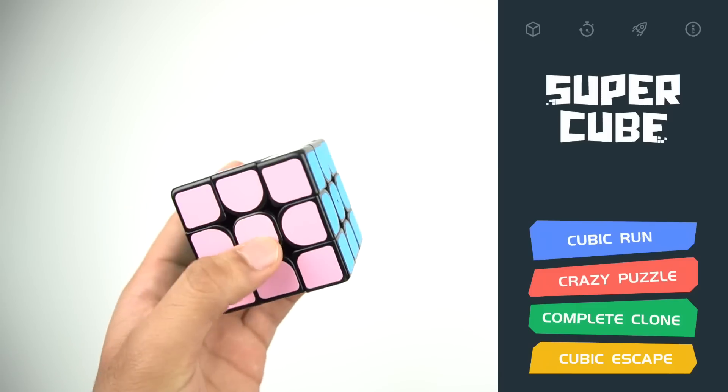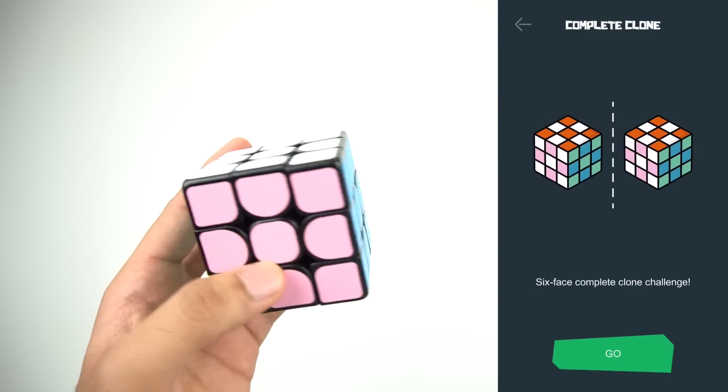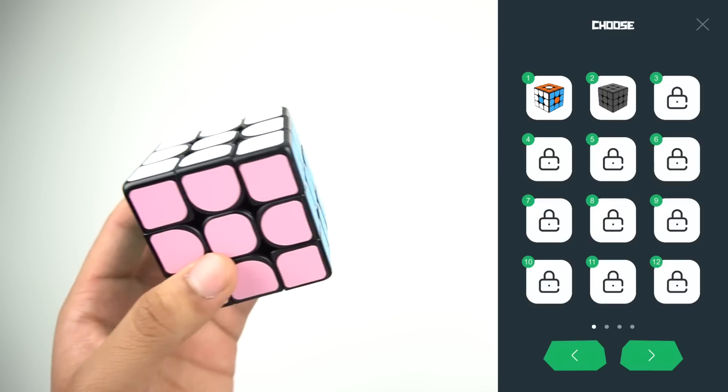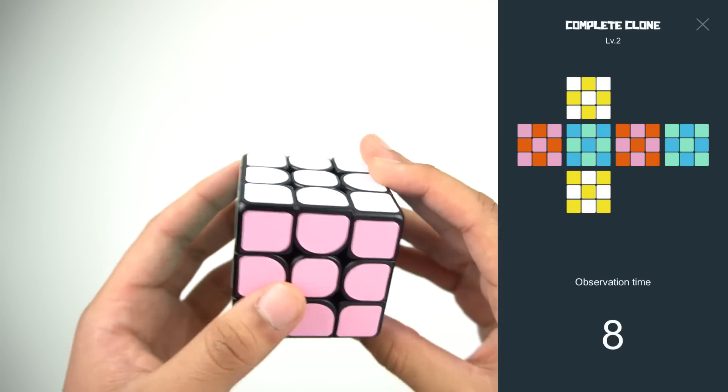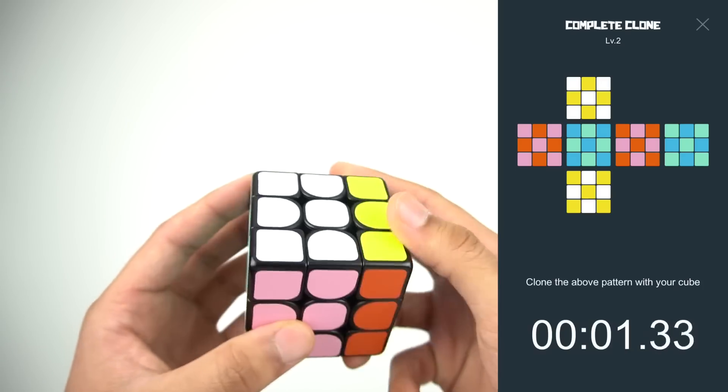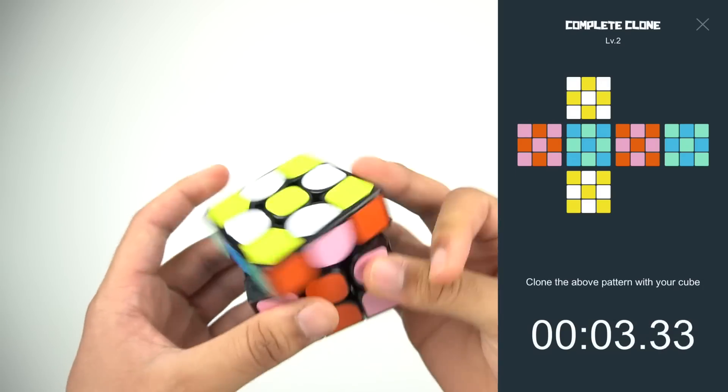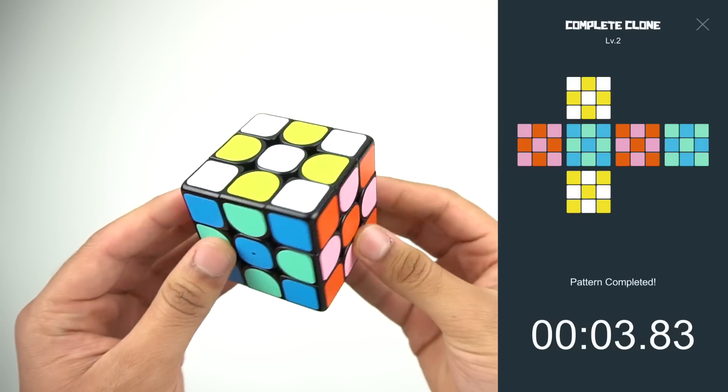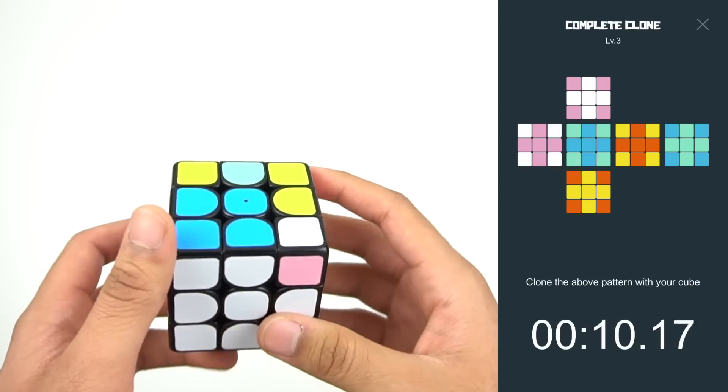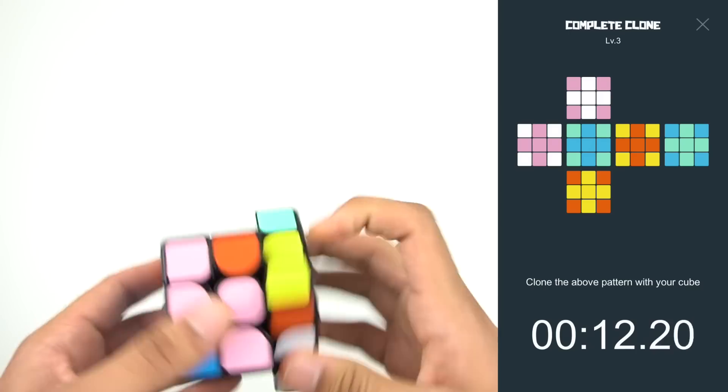This next one's probably my least favorite because it's so much more tedious. In Complete Clone, you're given 10 seconds to observe a pattern and then have to clone that on the whole cube. The good thing is at least the patterns are actual patterns that we see on cubes and not just random scrambles, which would be an absolute nightmare.